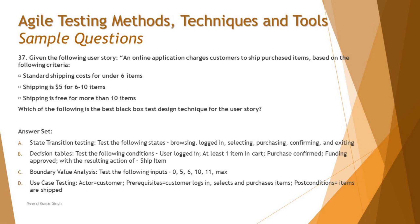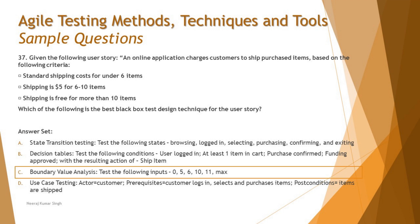Option D is use case testing: actor — customer, prerequisite — customer logs in, selects and purchases items, post-condition — items are shipped. This is not a scenario where we're talking about how the user will use the system; use cases reflect the real-world scenario between a user and the system, so it doesn't make sense here. The right answer is C — boundary value analysis, testing inputs 0, 5, 6, 10, 11, and maximum — because the scenario contains mathematical ranges and only equivalence partitioning and boundary value analysis apply, and only BVA is listed as an option.